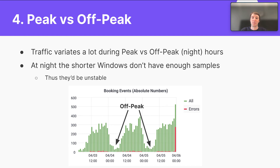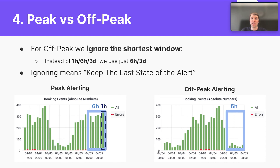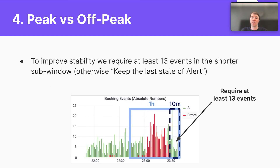The last concern to tackle was peak and off-peak hours. In our case, off-peak traffic is very significant, and it can still happen that during off-peak the window will not have enough samples and might be unstable. To solve it, we take two measures. First, we ignore the shortest window at off-peak — instead of one hour, six hours, and three days as used during peak time, we use just six hours and three days, ignoring the one-hour window, meaning it keeps the last state of the alert. Second, we require at least 13 events in the shorter sub-window; otherwise, we again keep the last state of the alert.